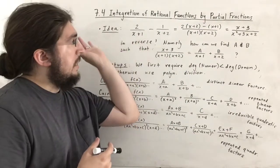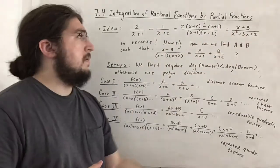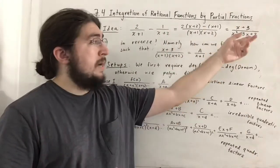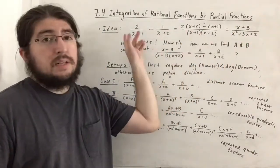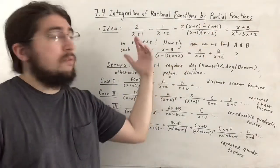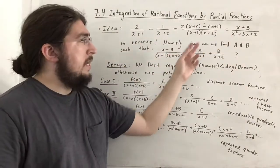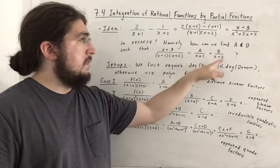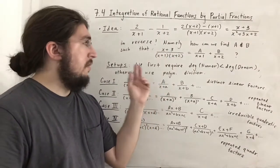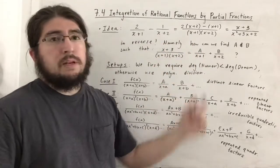The main idea is to reverse the process of combining two rational functions into one. Notice we have x plus 1 and x plus 2 as denominators, and the resulting rational function's denominator factors as the product of those. So we want to figure out this process in reverse — namely, find A and B such that our expression equals A over x plus 1, plus B over x plus 2.